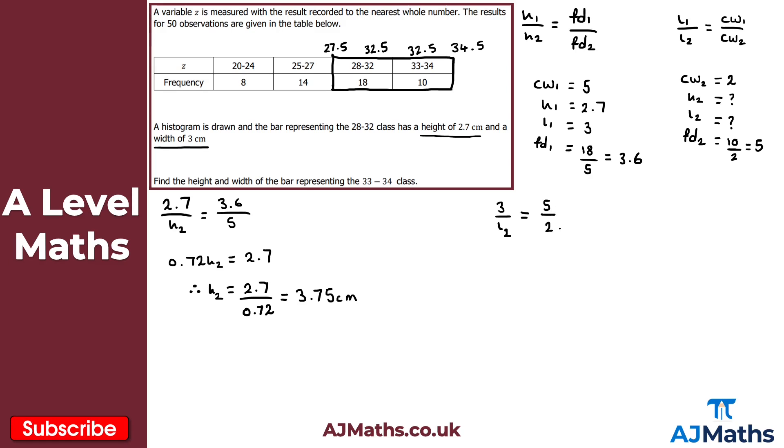5 over 2 is 2.5. What I've got then is 2.5 L2. Obviously, you could keep this in exact form if you want. It doesn't really matter. So I've got 5 over 2. Obviously, I've just times it through by L2 as well, just to make that clear. And that is equal to 3.